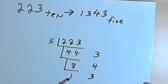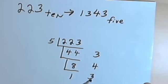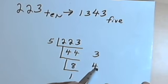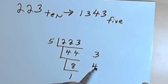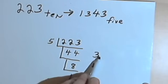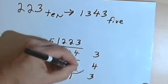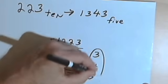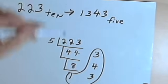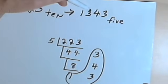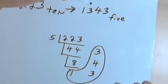Now if I look at these numbers, I've got the 1 that I just got. Working my way back through the remainders: the 3, then the 4 before that, then the 3 before that. So I've got 1343 base 5, which is the same number I got working the other way.